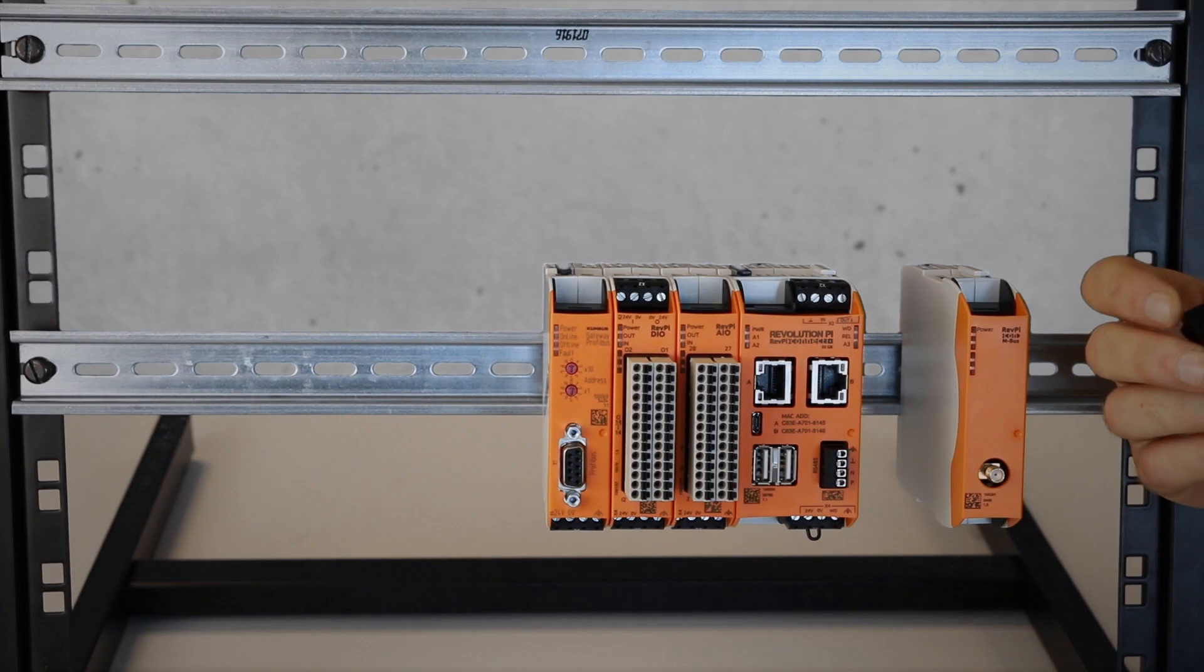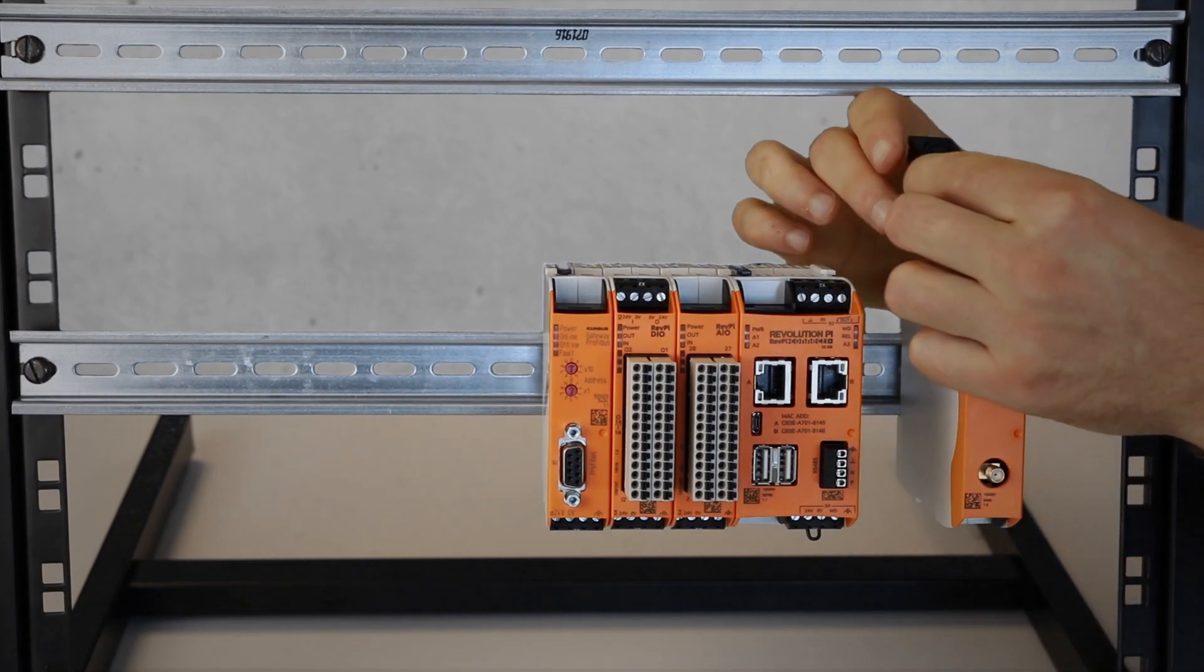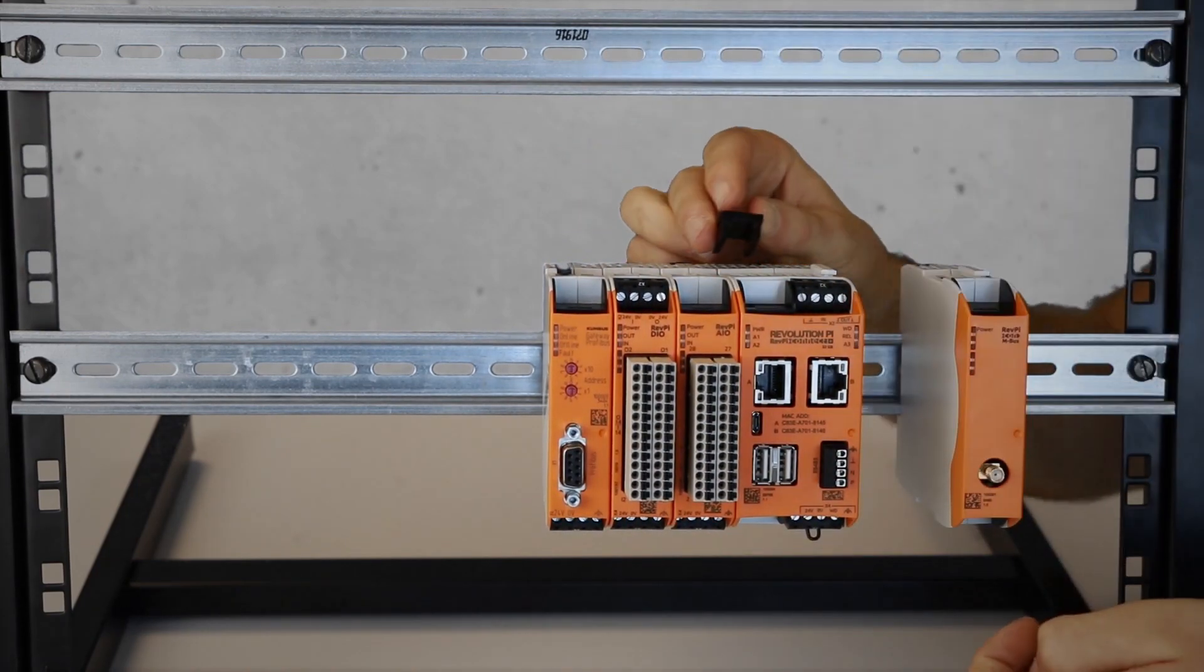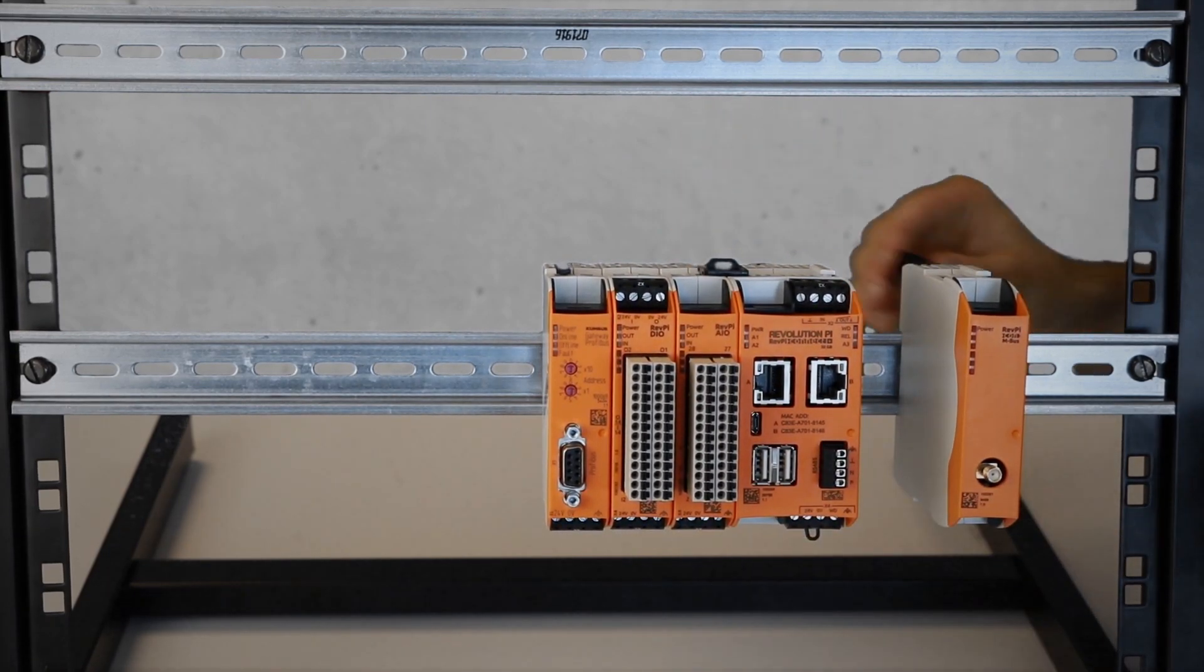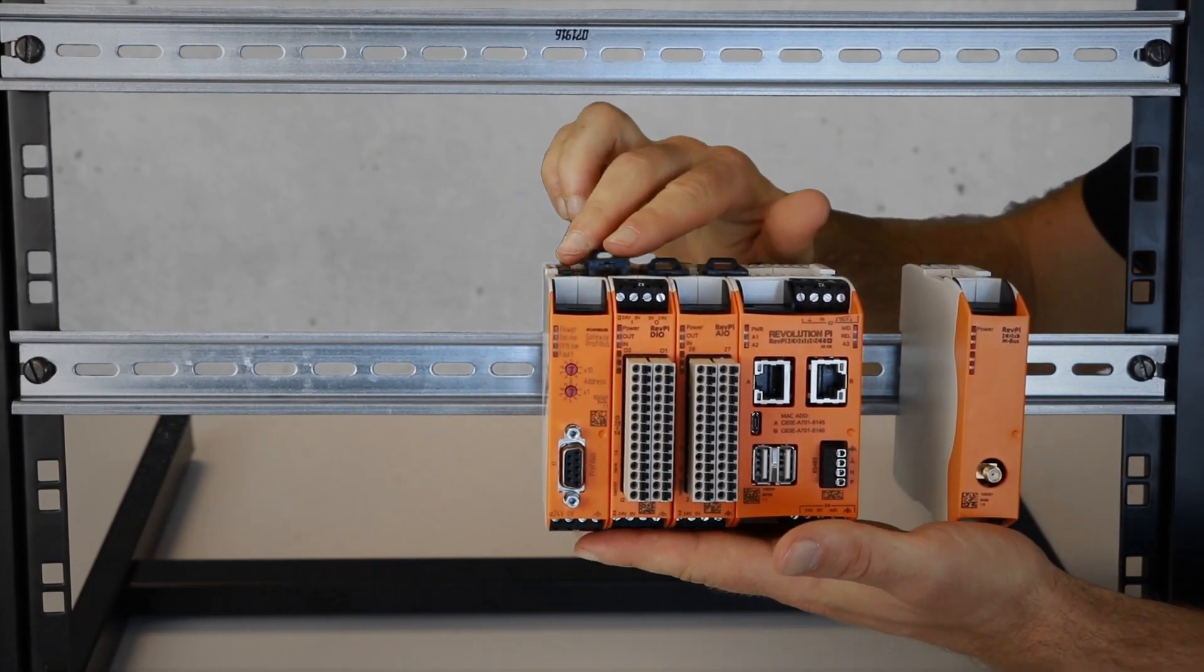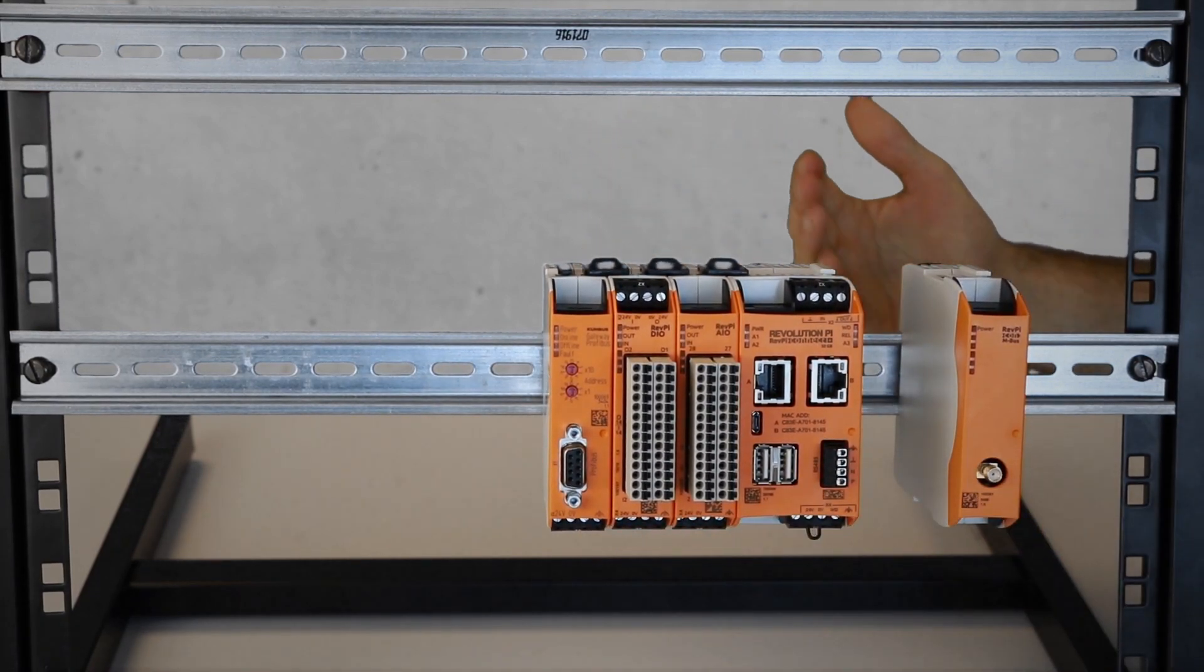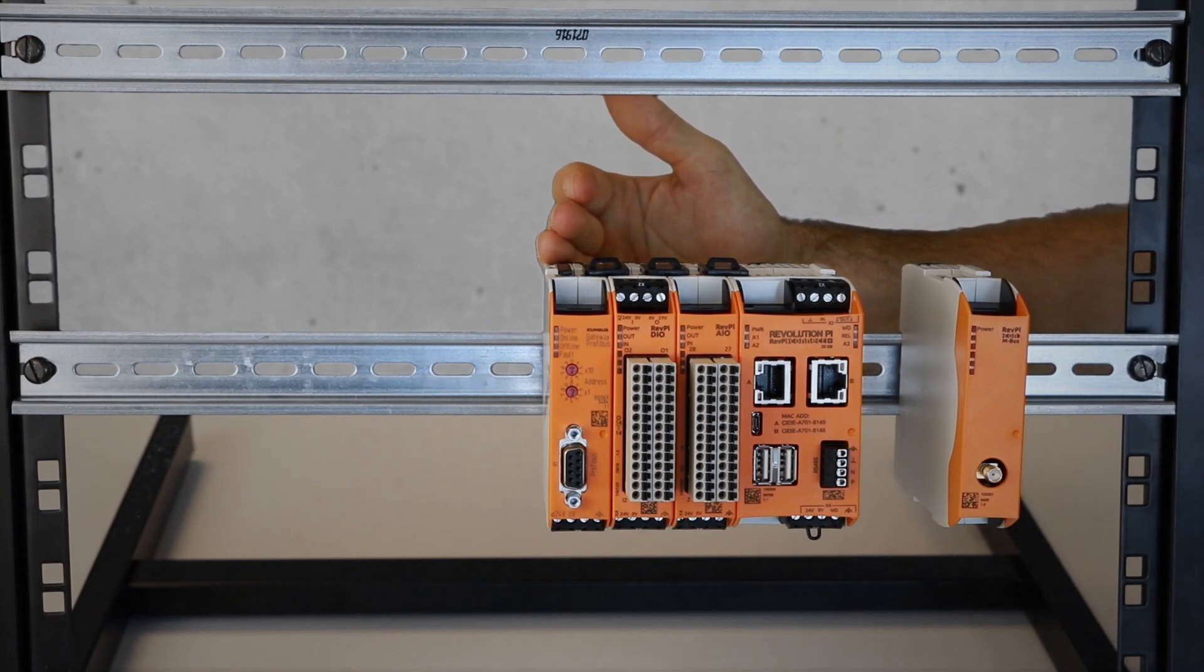I connect the I/Os via the black colored Pi bridge. Once more, the Profibus gateway is placed on the left outermost position.